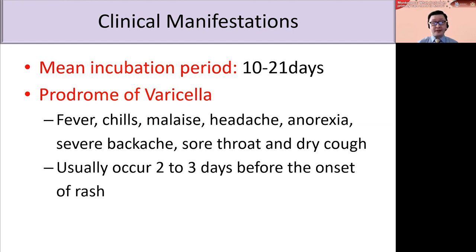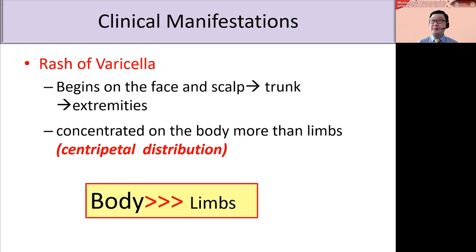The prodrome of chickenpox includes fever, chills, malaise, headache, anorexia, severe back pain, sore throat, and dry cough, usually lasting two to three days before the onset of rash. The rash of chickenpox typically begins on the face and scalp, then spreads to the trunk, and finally comes to the extremities. The rash in chickenpox is more concentrated on the body than the limbs — centripetal distribution — which is an important feature to differentiate from monkeypox.